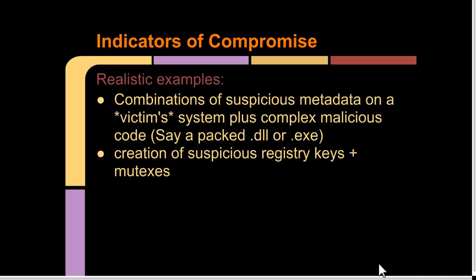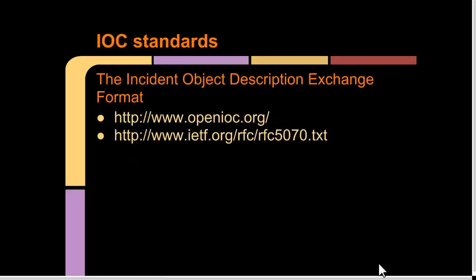Some realistic examples of strong indicators of compromise involve combinations of things — like suspicious metadata in a file combined with some packed assembly code in a process space. It could be a packed module like a DLL that's been injected into a vulnerable victim process. Or perhaps the creation of a number of suspicious registry keys in the system startup directory, and perhaps mutexes. There are standards established by the Open Indicator of Compromise initiative, used to effectively communicate in a standardized way indicators of compromise, defined in an RFC that's been around since the early 2000s.